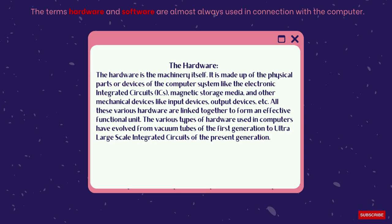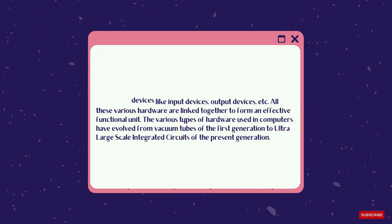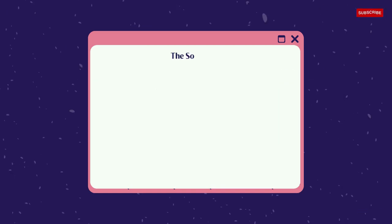The various types of hardware used in computers have evolved from vacuum tubes of the first generation to ultra-large-scale integrated circuits of the present generation.